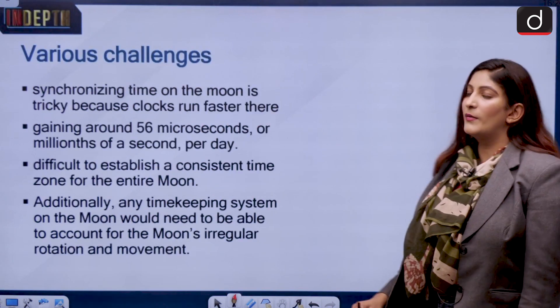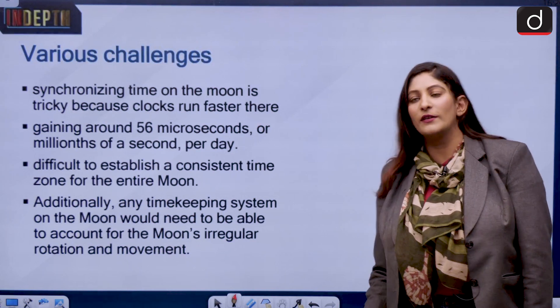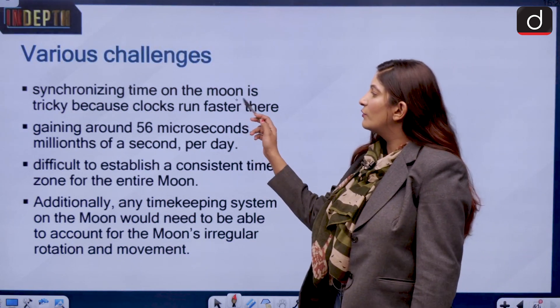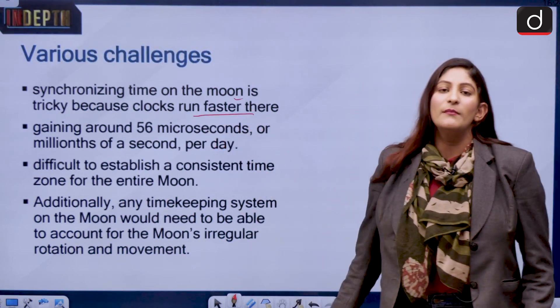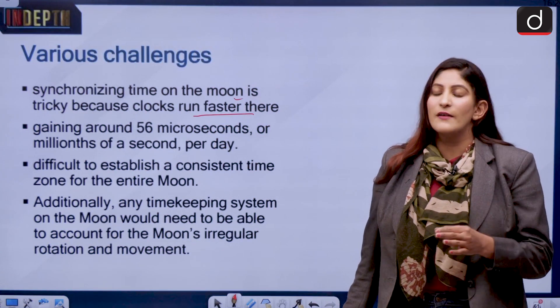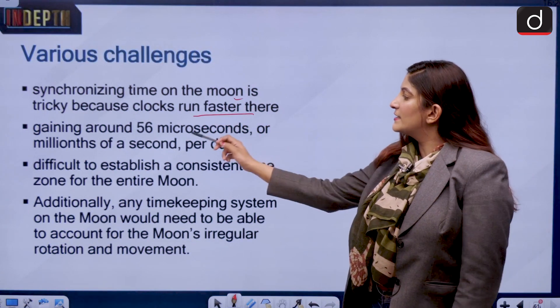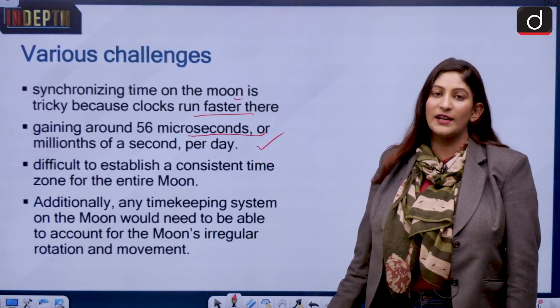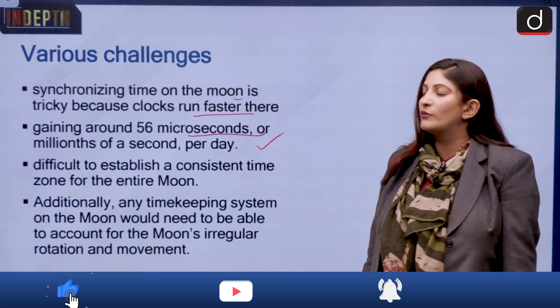Now if we talk about challenges, there are many challenges because it would be very difficult to synchronize time on the moon and the earth. There the clock runs faster and gains around 56 microseconds, or a millionth of a second per day, and that will amount to a lot.